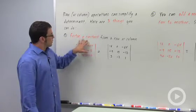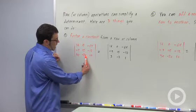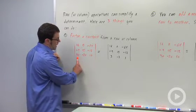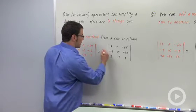With any determinant, you can factor a constant from a row or column. So for example, here I've got a lot of common factors in each of my rows. Take a look at the last row. I have a common factor of 10. You can pull that right out and put it in front.